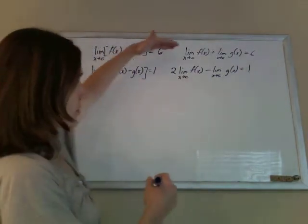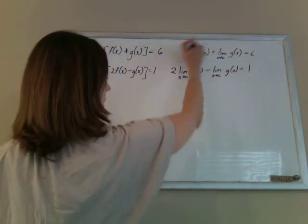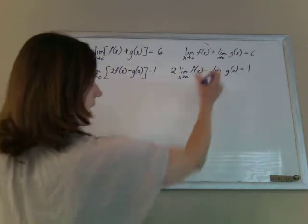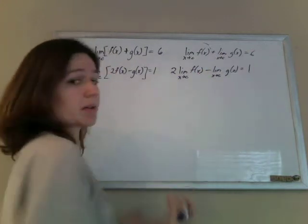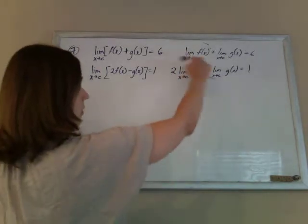And now, we basically have two equations with two unknowns. Big, fat, clunky unknowns. But if you picture the limit of f(x) as being like a big x and the limit of g(x) as being like a big y, it's just a big unknown. And we need to solve for the limit of that.